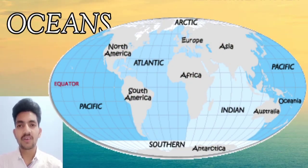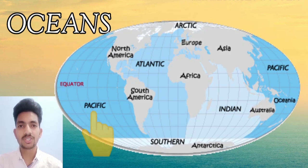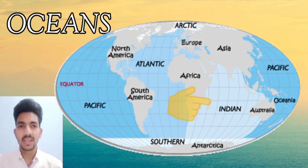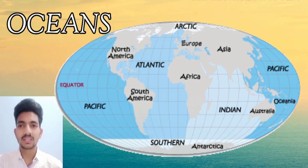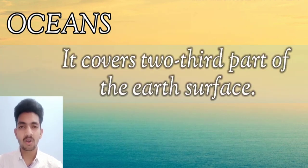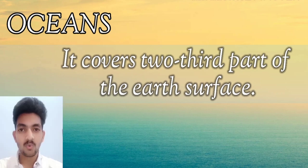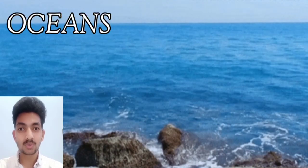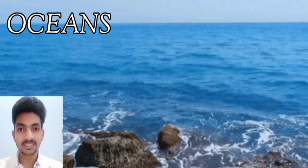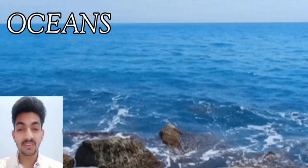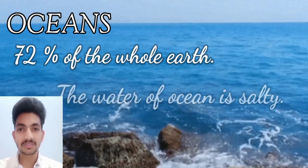Oceans. There are five oceans: Pacific Ocean, Atlantic Ocean, Indian Ocean, Arctic Ocean, and Southern Ocean. They cover two-thirds of the earth's surface, which means water on the earth is around 72 percent of the whole earth.